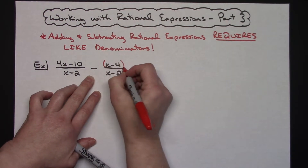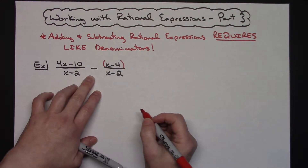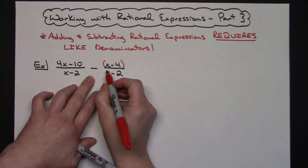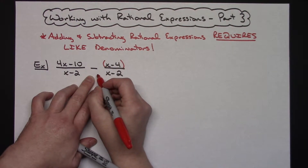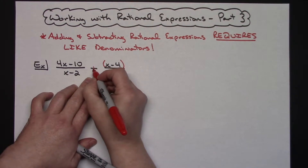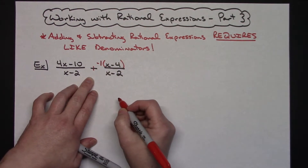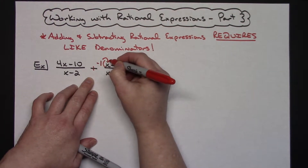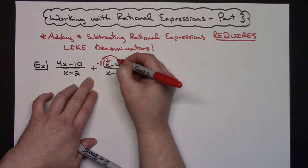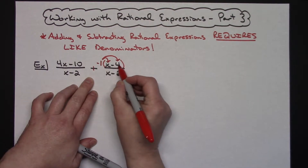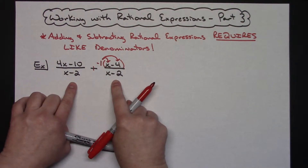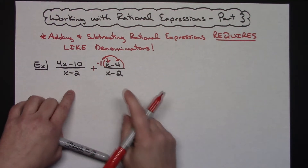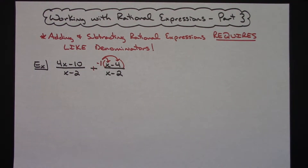That's why I chose this specific example. Subtracting does go through and change all the signs. If you want to see it algebraically, that negative one is there and you would be distributing that negative one, which would then go through and change each of the signs. In this first example, as you can see, I already have common denominators, so I did want to start out with a relatively simple one in that aspect.